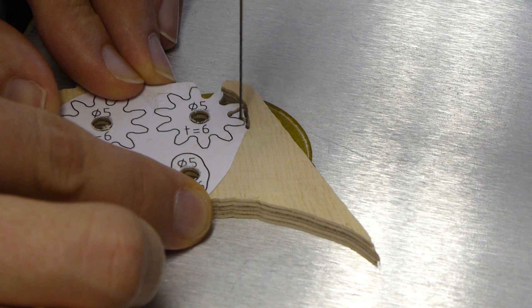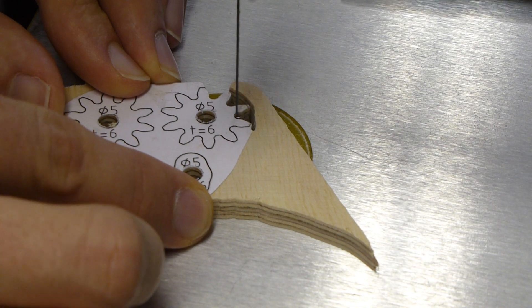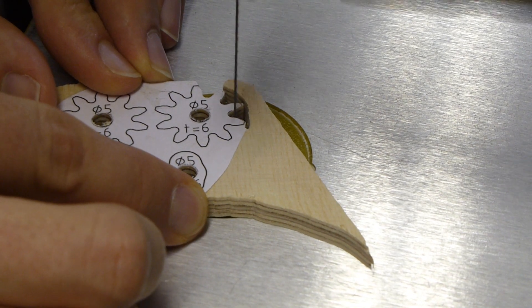Wenn der erste Schnitt nicht gleich perfekt wird, kann man mit dem Sägeblatt das überschüssige Material abfräsen.